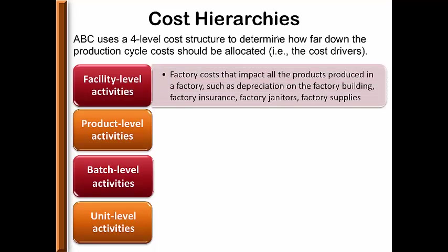Facility-level activities: the cost pool should consist of factory costs that impact all of the products produced — not just Coca-Cola or just Sprite, but all products produced in that facility. It could include depreciation on the factory building, factory insurance, factory supplies, janitors — all of the costs related to the facility.